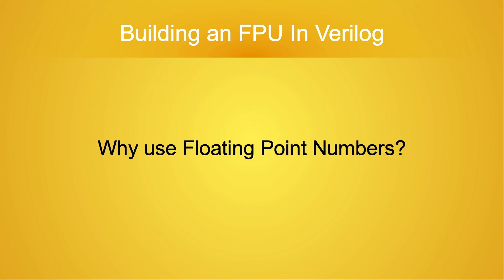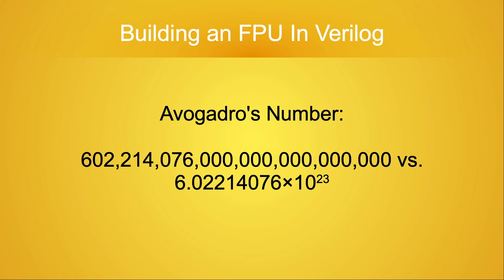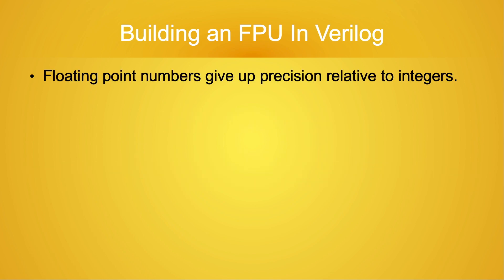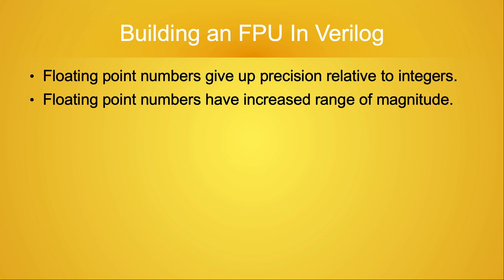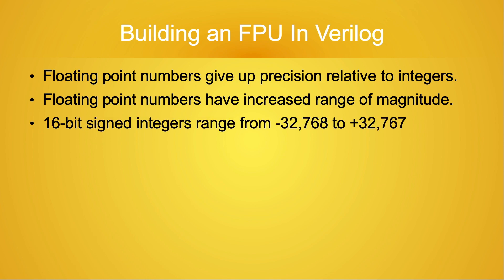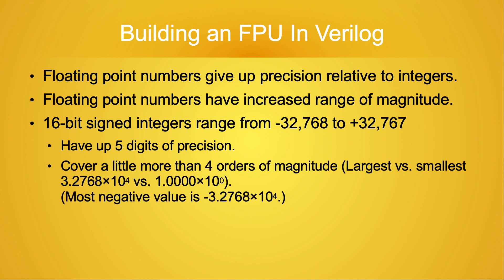In case you don't already know, floating-point numbers are the binary analog to scientific notation. Scientific notation, of course, is a convenient way of dealing with both very large and very small numbers. Relative to integers, floating-point numbers trade digits of precision for an increased range of magnitude. In this video, I'm going to be working with 16-bit floating-point numbers. For 16-bit signed integers, the values we can use range from about minus 33,000 to plus 33,000, and we can do so with up to 5 digits of precision.